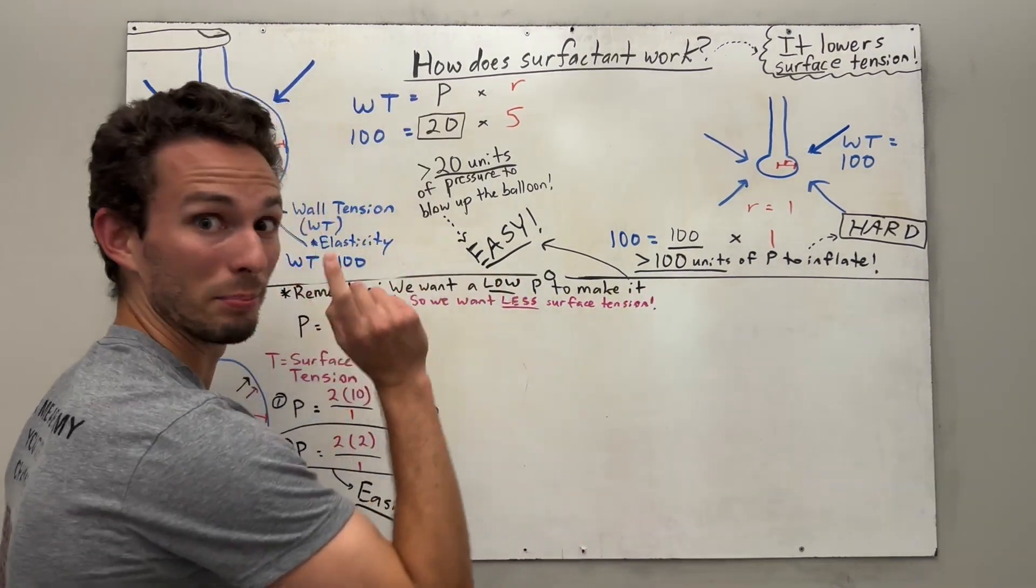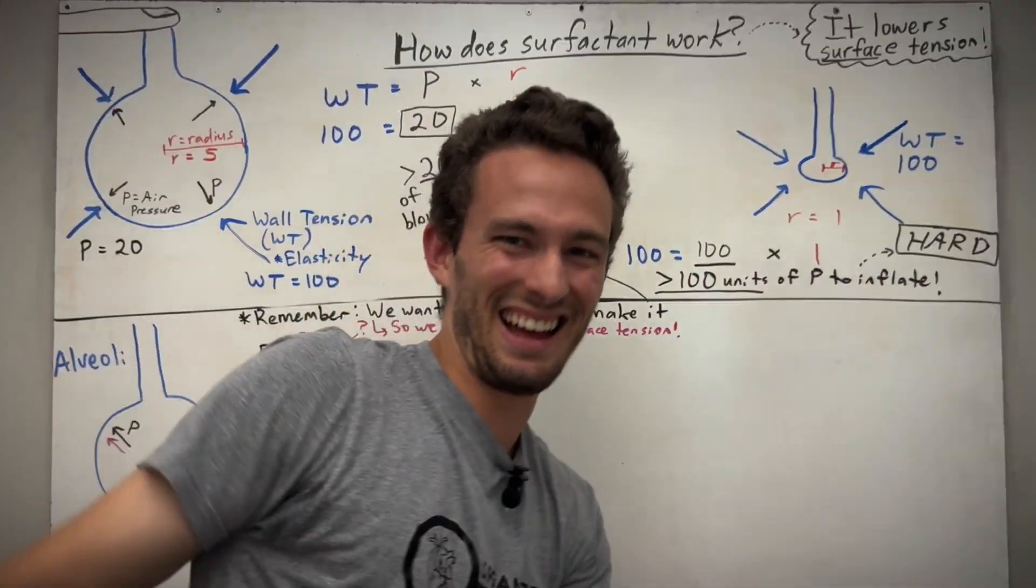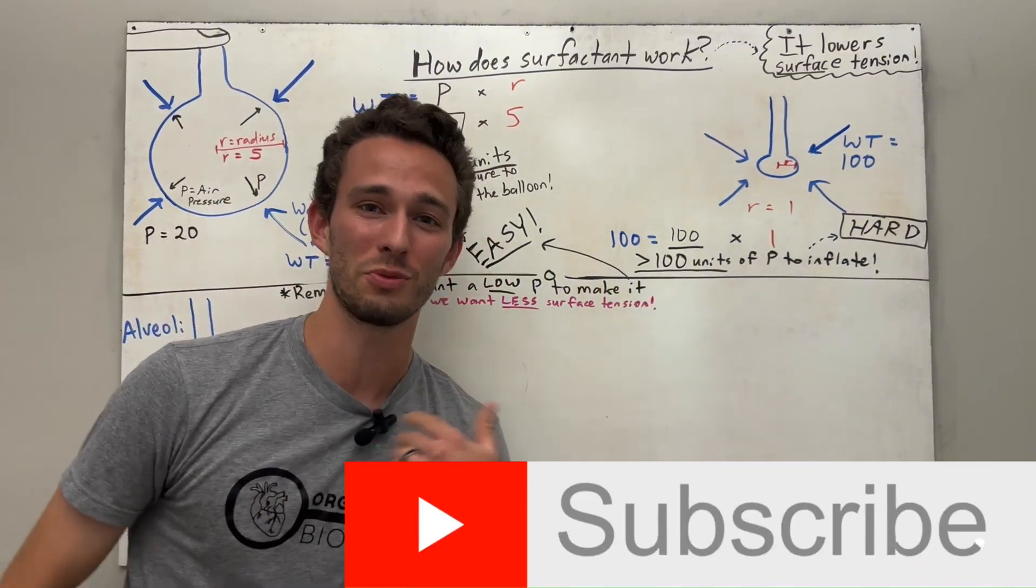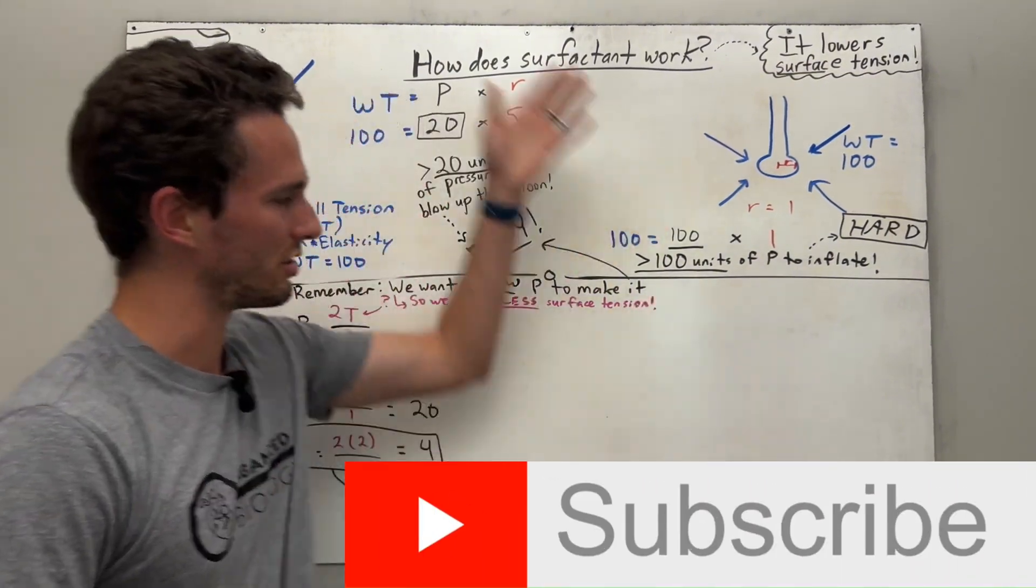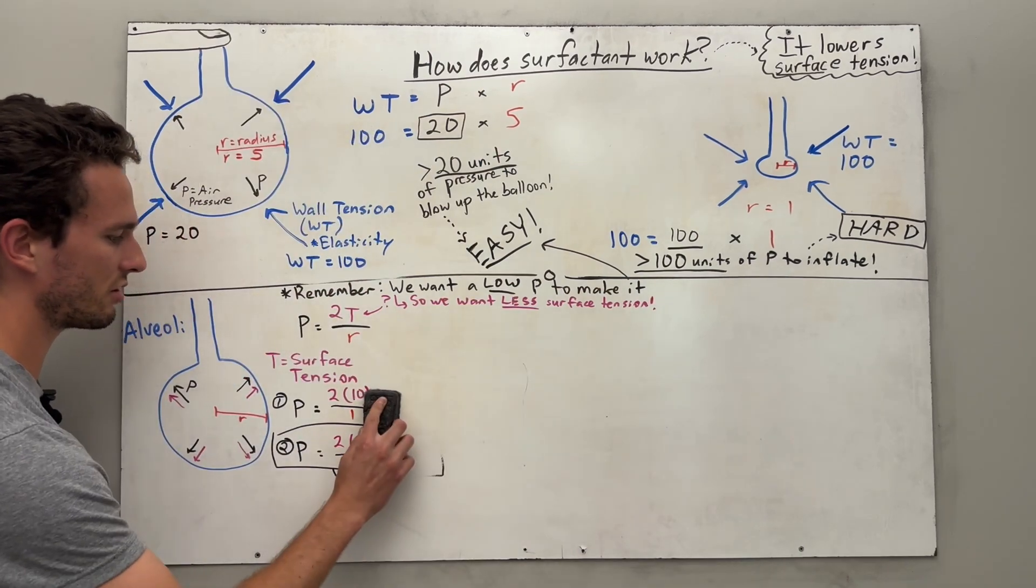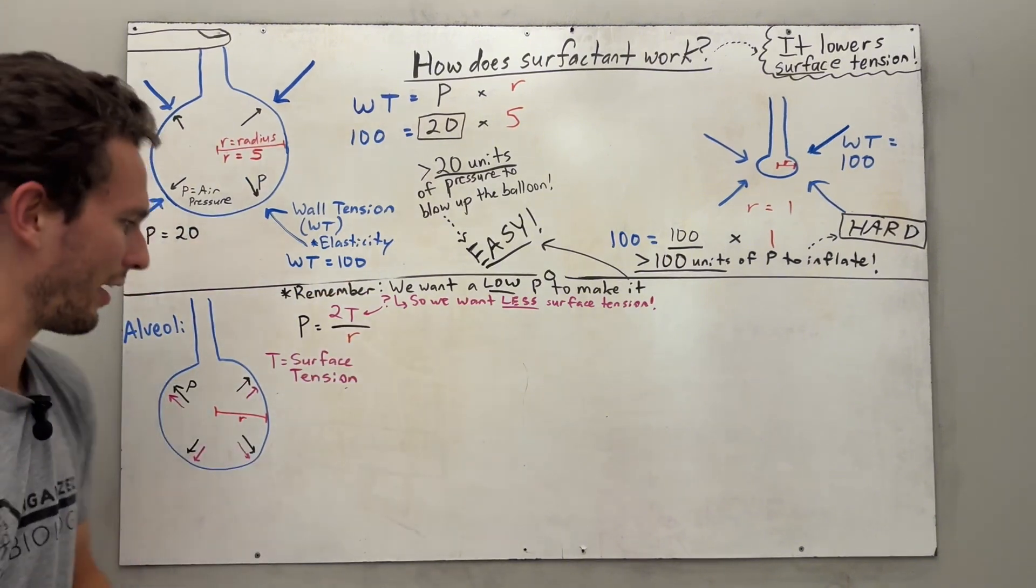This should ring a bell in your mind, right? Because surfactant lowers the surface tension. Ding! So we're getting somewhere. If this has been helpful so far, please like this video, subscribe to the channel. I'll make a lot more videos making difficult concepts like this easy for you. So we've mentioned that surface tension needs to be low, but we haven't discussed what it actually is quite yet, have we? So let's get into that.